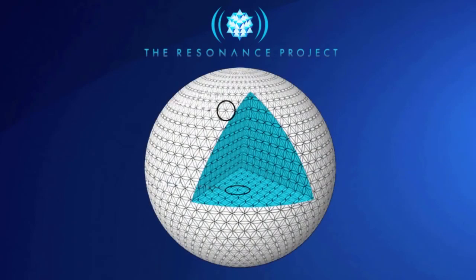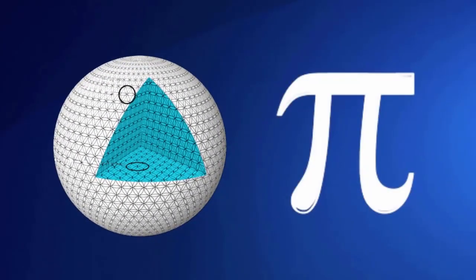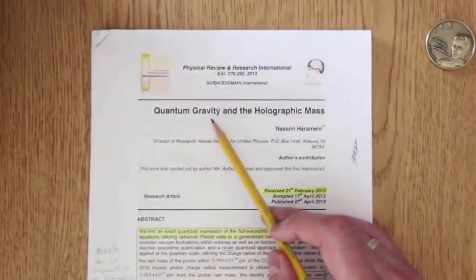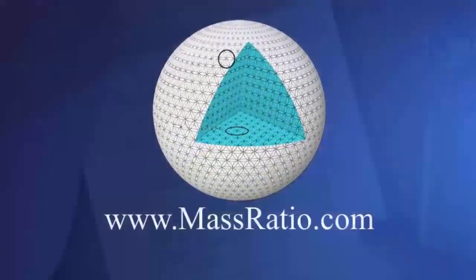The Resonance Project in Hawaii have made a new discovery. They've discovered a new mathematical constant, kind of like pi, but this new constant is called the quantum gravity and the holographic mass ratio. We'll just call it the mass ratio for short.